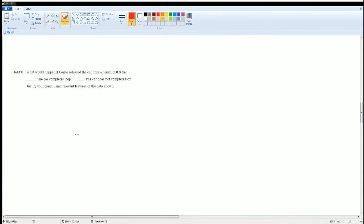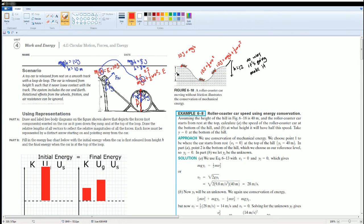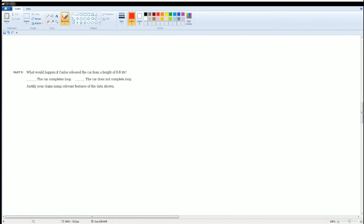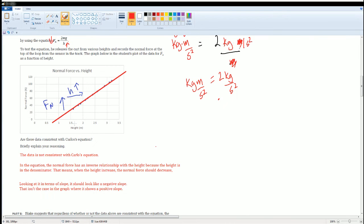And lastly, what would happen if Carlos released it from a height of 0.8 meters? Does the car complete the loop or does not complete the loop based on the graph? So, take a look at the scenario here. At this point, it needs to have both force normal and force of gravity. I said that the car will not make the loop and that is because looking at the line of best fit, a height of 0.8 will produce a negative normal force. Check it out.